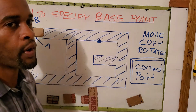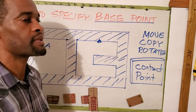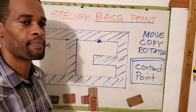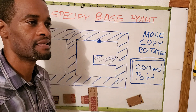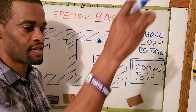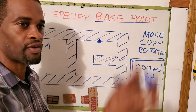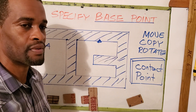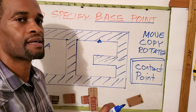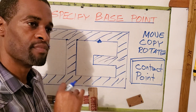Just in case your midpoint snap is not on, simply type OSNAP and press Enter. This will take you to the snap settings dialogue box. Simply tick Midpoint and you'll be good to go.